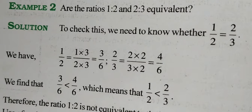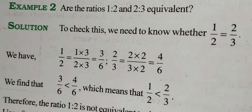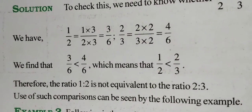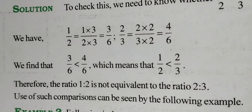You will first check the denominators, find out the LCM, and make the denominators same. Then you compare the quantities. If the values are not equal, then you see whether it is smaller than or greater than. If the values are same, then we call it equivalent. So, therefore the ratio 1 is to 2 is not equivalent to the ratio 2 is to 3, as the values are not same. Hope you have understood. Let's move on to Exercise 8.1.